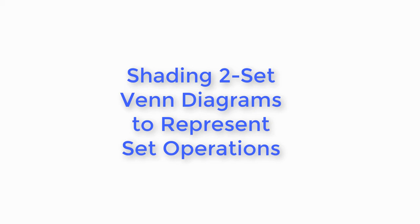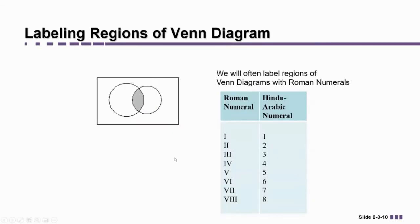Hi, I'm Ms. Hearn. Let's get started. All right, so this is an example of a Venn diagram. It's a Venn diagram containing two sets. For example, this might be set A and this might be set B.